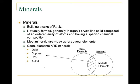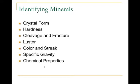Minerals are what rocks are made of — just like organs make up a person. Marble might contain quartz, for example. Minerals are naturally inorganic crystalline solids with specific chemical compositions. Some are made of multiple atom types, like carbonates (carbon and oxygen), while others are pure elements like gold, copper, iron, and sulfur.